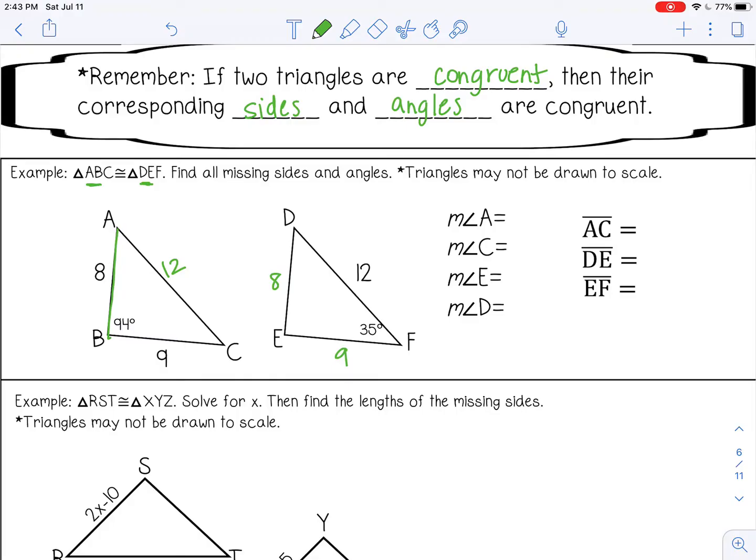That's the same for angle measures. Angle B corresponds with angle E—they're both 94 degrees. Angle F and angle C will be equal, both 35 degrees.